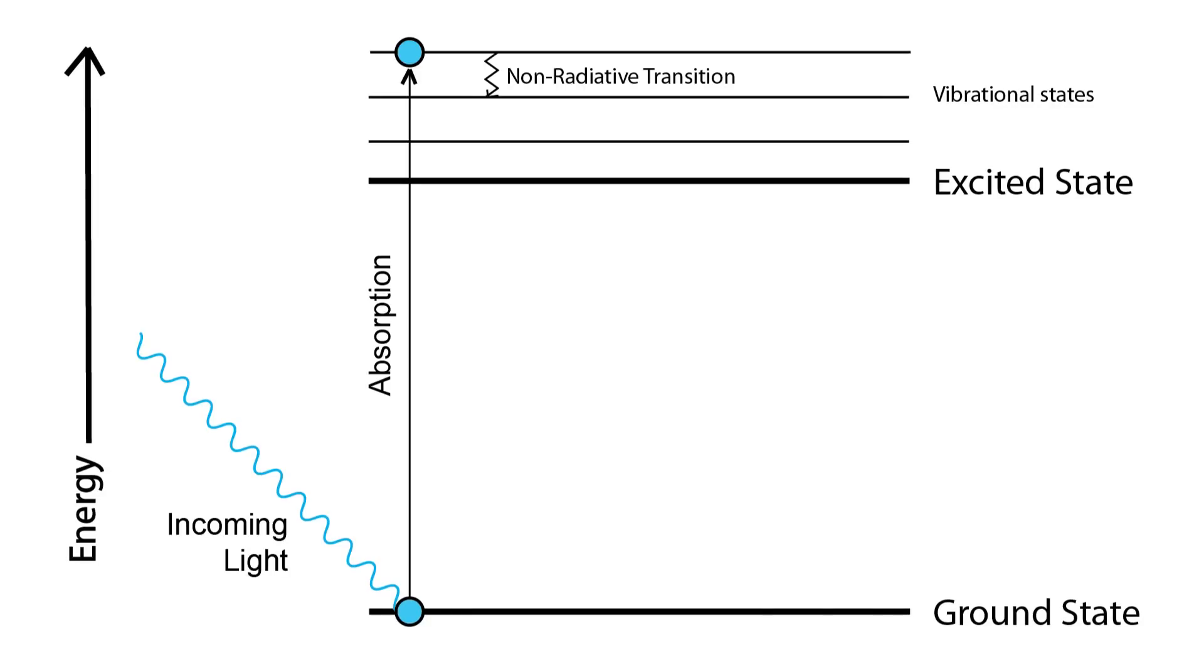These electrons then lose a bit of energy due to vibrations of the molecules. And finally the electrons return to the ground state by releasing light. Now since energy cannot be created or destroyed and a bit of energy was already lost as heat in the vibrations of the molecules, the energy of light emitted must have lower energy than the light absorbed.